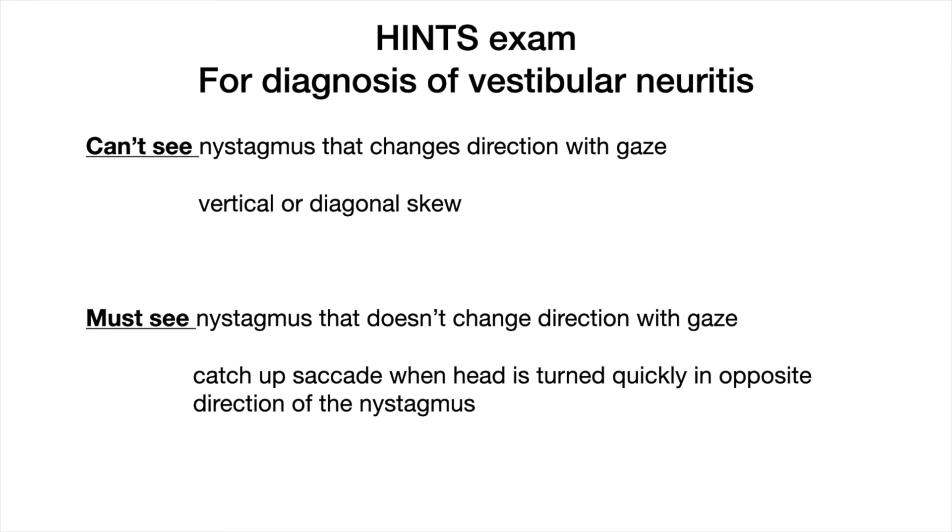And you must see an abnormal head impulse test — that is, a catch-up saccade when the head is turned rapidly in the opposite direction of the nystagmus. For the woman who has nystagmus beating to the left, when I turn her head rapidly to the left there is no catch-up saccade, but when I turn her head rapidly to the right, there it is. That's an abnormal head impulse test, shown in slow motion as well.